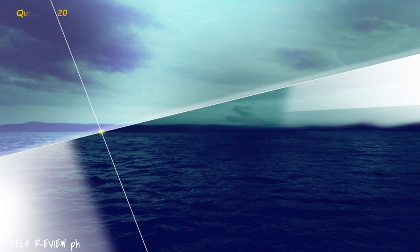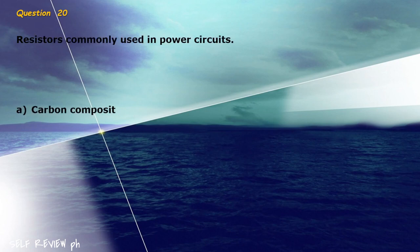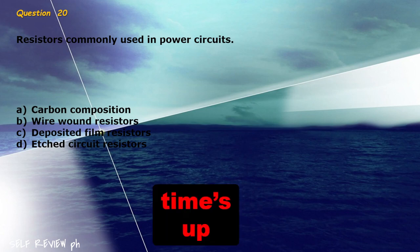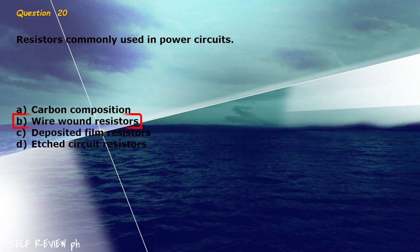Question 20: Resistors commonly used in power circuits. A) carbon composition, B) wire wound resistors, C) deposited film resistors, D) etched circuit resistors. The correct answer is letter B, wire wound resistors.